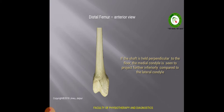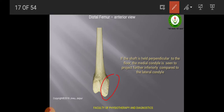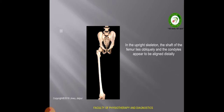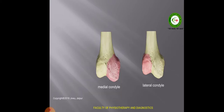This is the lower end of the femur. Here we can see the two condyles: the medial and the lateral condyle of the femur. If the shaft is held perpendicular to the floor, the medial condyle is seen to project further inferiorly compared to the lateral condyle. The medial condyle is the more massive one. In the upright position, the shaft of the femur lies obliquely and the condyles appear aligned distally. Because of this massiveness of the medial condyle, the femur lies obliquely in our body.